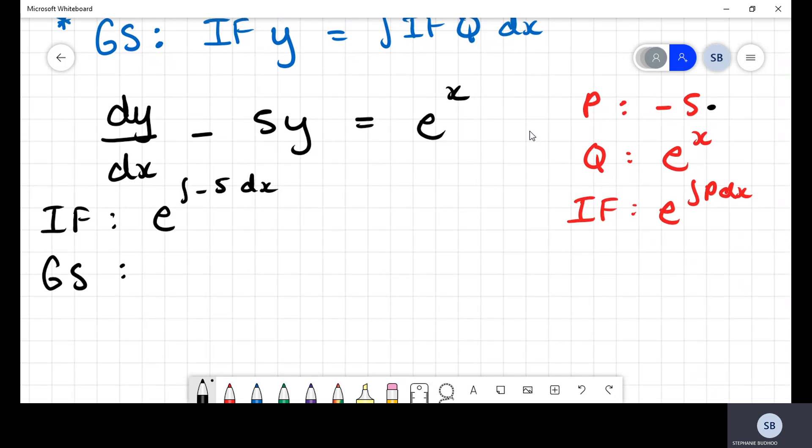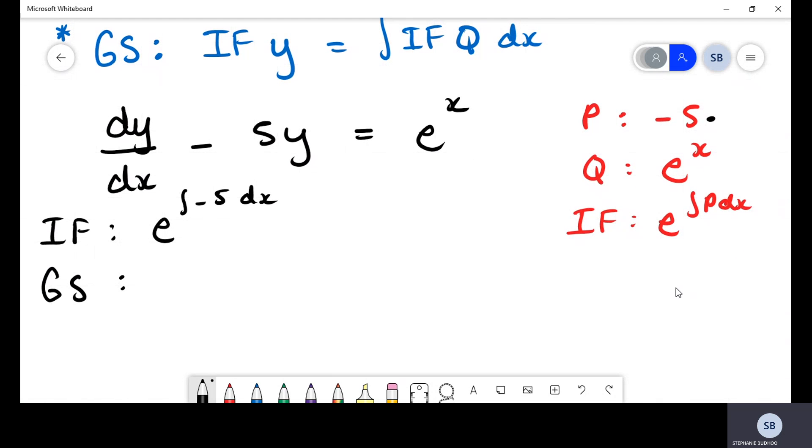If you recall my shortcut, IF·y = ∫IF·Q dx, we can simply write down what we have. So IF is given by e^(∫-5 dx) equals the integral of IF·Q, which is given by e^(∫-5 dx) and Q as we determined is e^x dx.